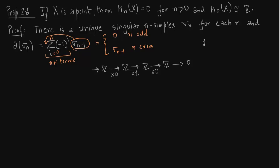You see that for H0 everything is easy, always C0 over image of δ1 which is 0. C0 is integers, so what we get is integers. That is the latter part of the proof.